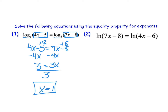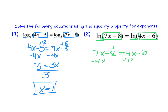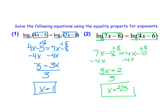Looking at example 2, remember natural logs are simply base e, so this same property applies. If we have natural log base e on the left as the dominant function and on the right with nothing else around it, we can again set the insides equal because we have a log with the same base. Going through that same process: subtract 4x from each side, add the 8 over, so I have 3x is equal to 2, divide by 3, and x is equal to 2 thirds. The property of equality simply allows us to set the insides of logs equal if their bases are the same and they are set equal to each other.